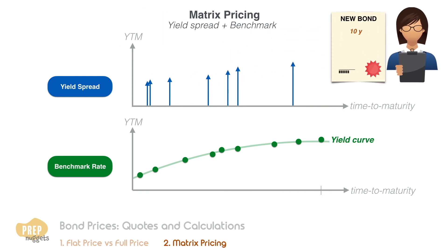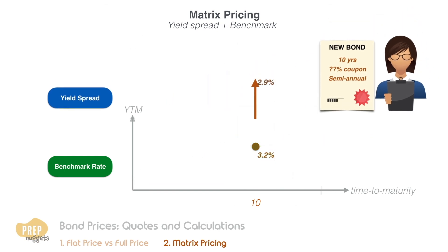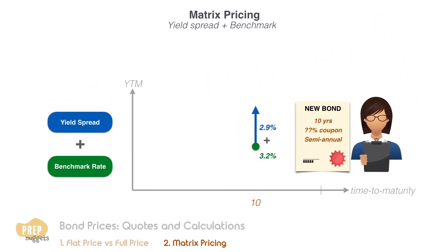For example, if a company wants to issue a bond of 10 years to maturity, we can estimate the benchmark yield as the midpoint between the yields of government bonds with 9 and 11 years to maturity. This works out to a benchmark yield of 3.2%. Likewise, we estimate the spread specific to this issuer based on similar bonds with 9 and 12 years to maturity, which works out to a yield spread of 2.9%. Adding the two estimated yields gives an estimated discount rate of 6.1% for this new issue. The issuer may then set the coupon rate at 6% and sell the bond at a discount.